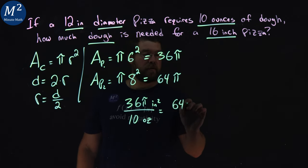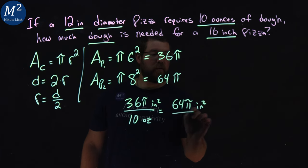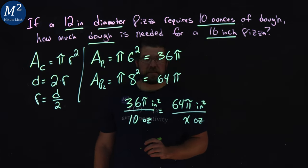And this is inches squared. A 64 pi inches squared pizza, we want to figure out how many ounces, x ounces, that is.